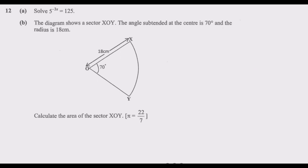Let us look at question 12a: solve 5 to the power negative 3x equals 125. This is one of the common questions which comes from the topic of indices. The first thing is we have 5 to the power negative 3x on the left side, and we need to express 125 in the base of 5 — that is, what number can we multiply by itself a given number of times to give us 125.